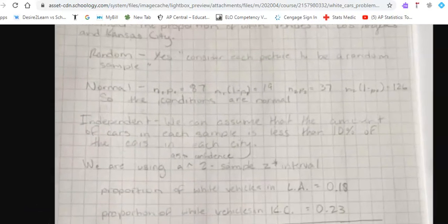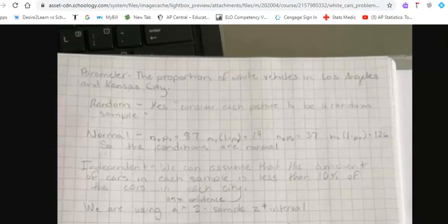When you do the two-sample proportion intervals, you're going to need to do two parameters, and so this is one improvement we can make with Cats. p1 would be the proportion of all cars in Kansas City that are white, and then p2 would be all cars in Los Angeles that are white.